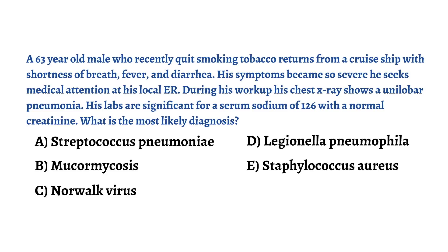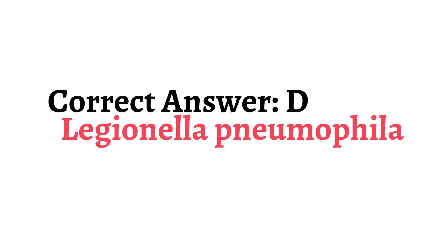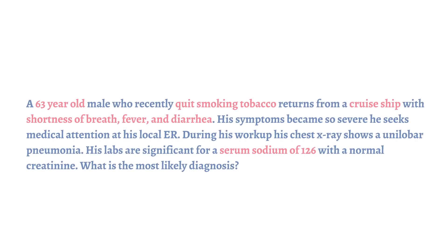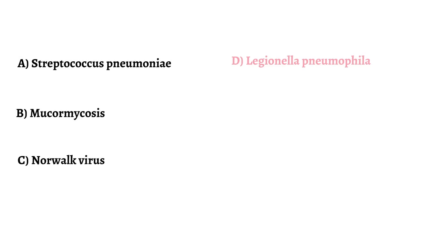We'll pause here to think about your answer, but we'll go ahead and talk about the correct answer. The correct answer is D Legionella pneumophila. Now let's see how we came to that answer. Whenever we try to tackle a test question, it is important to take a quick view of the key portions in the stem. We have an elderly smoker with symptoms of pneumonia and diarrhea who has been on a cruise ship recently and presents with hyponatremia. Let's begin by going to the answer choices and eliminate them one by one.